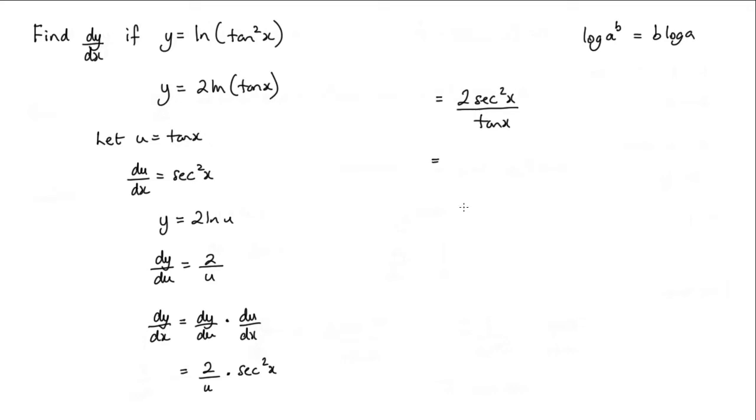Now this will actually simplify a bit. Sec squared x is 1 over cos squared x. So I've actually got 2 times 1 over cos squared x. So that's 2 over cos squared x. And that's multiplied by 1 over tan x.